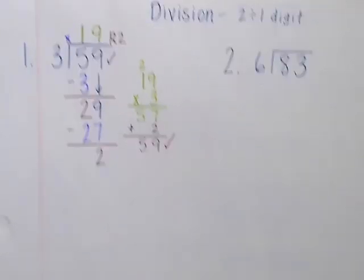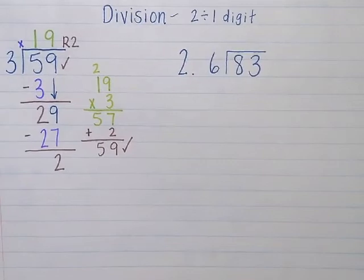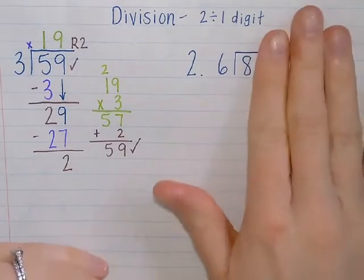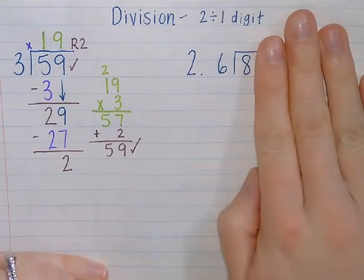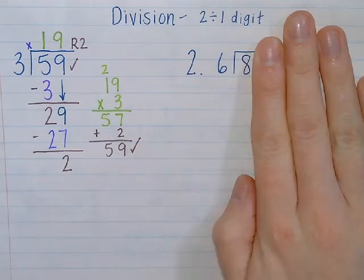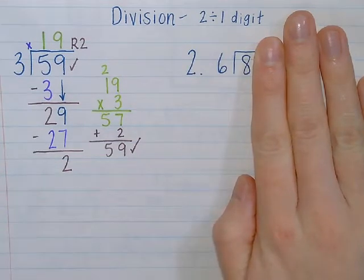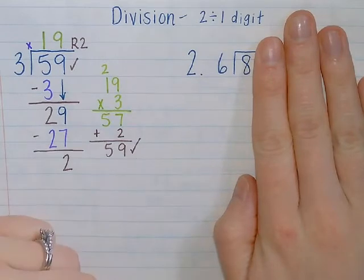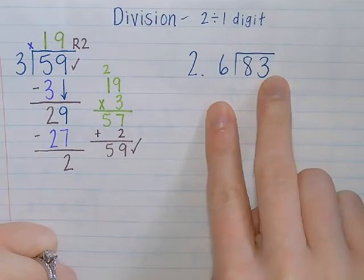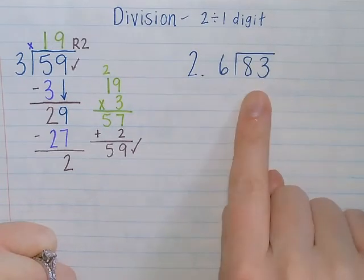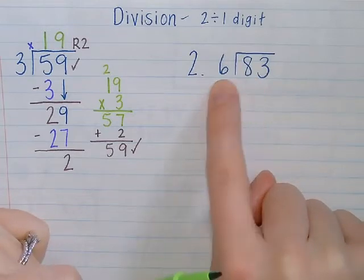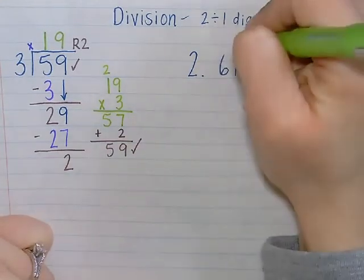All right, let's try it one more time with number two. Again, my first step is always going to be, can I make an equal group of six out of eight? Yes. Then I need to ask, how many equal groups of six can I make out of eight? If I count by sixes: six, twelve. Twelve is too many, so I need to go back one. I can make one equal group of six out of eight, so that one goes right above the eight.